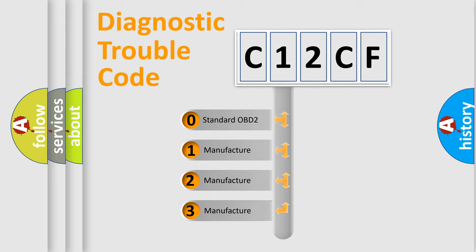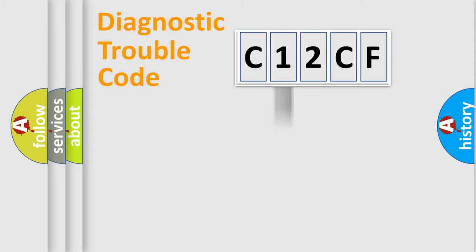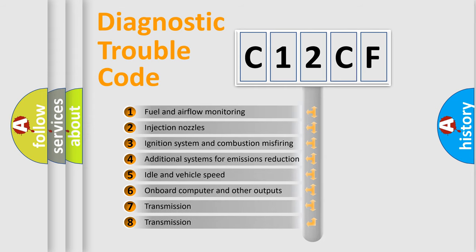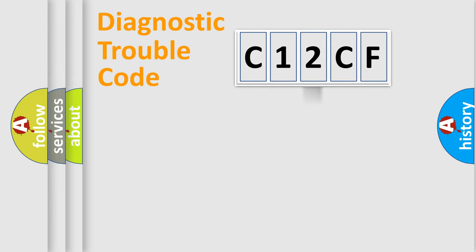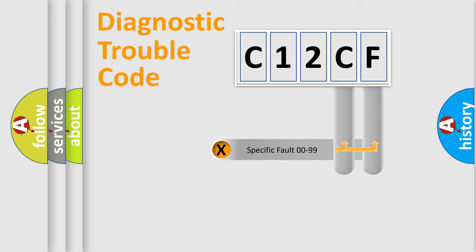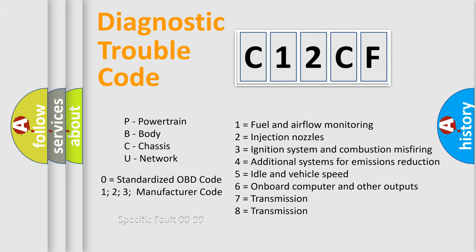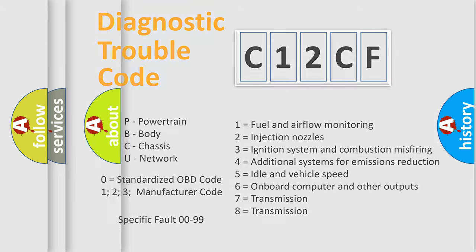If the second character is expressed as zero, it is a standardized error. In the case of numbers 1, 2, or 3, it is a more specific expression of a car-specific error. The third character specifies a subset of errors. This distribution is valid only for the standardized DTC code — only the last two characters define the specific fault of the group, and only when the second character is zero.